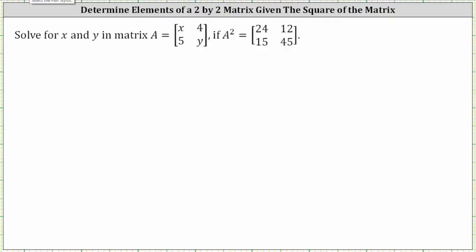A squared is equal to A times A. Let's set this up as matrix A times matrix A equals the matrix A squared.